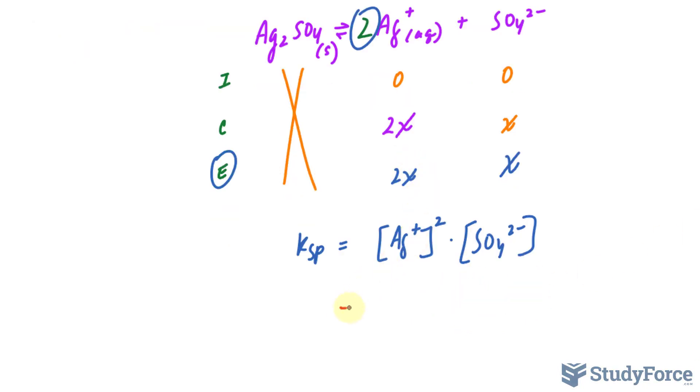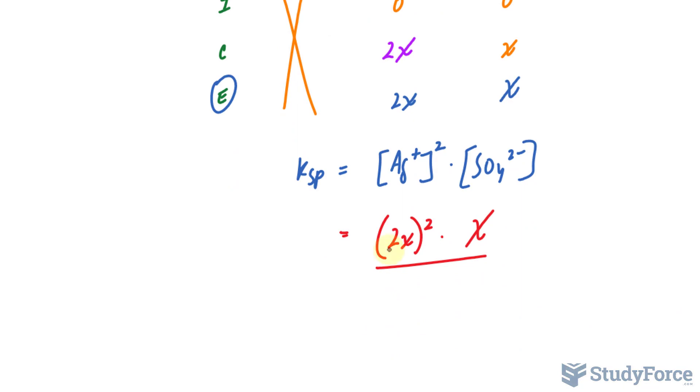I'll substitute 2X into here. So I have 2X raised to the power of 2, times X, and let's combine these. We get 2 to the power of 2 is 4. X to the power of 2 is X squared, times X, that's X to the power of 3.